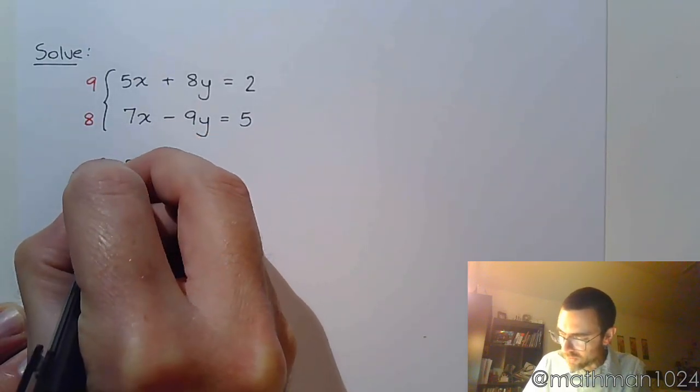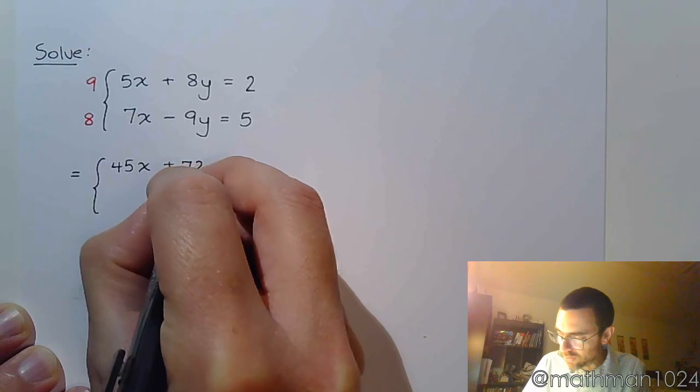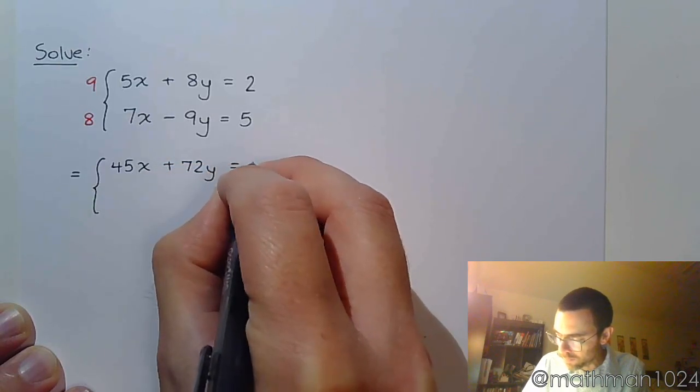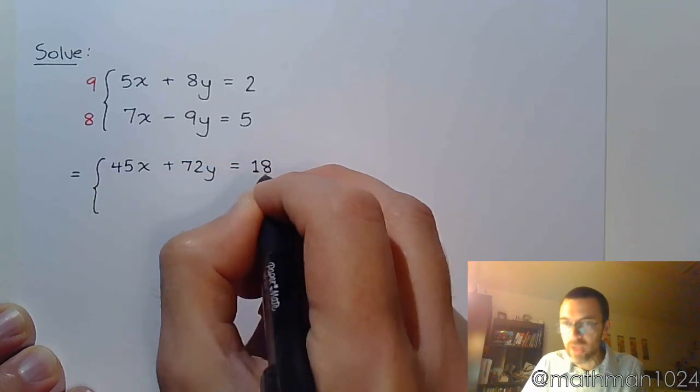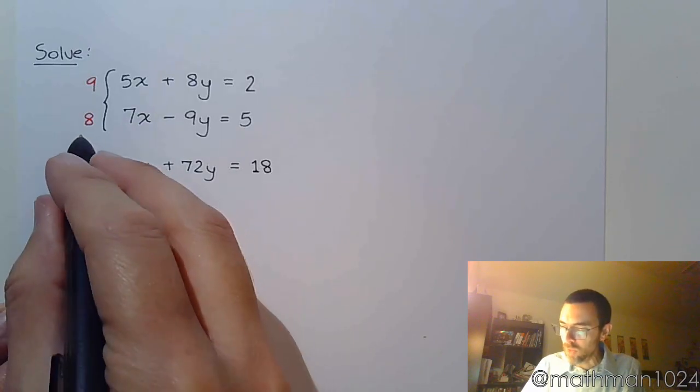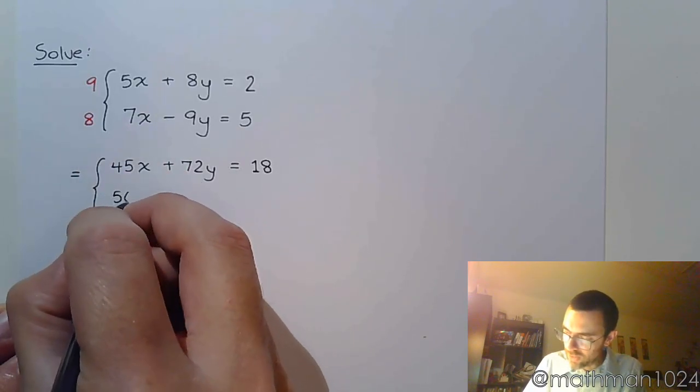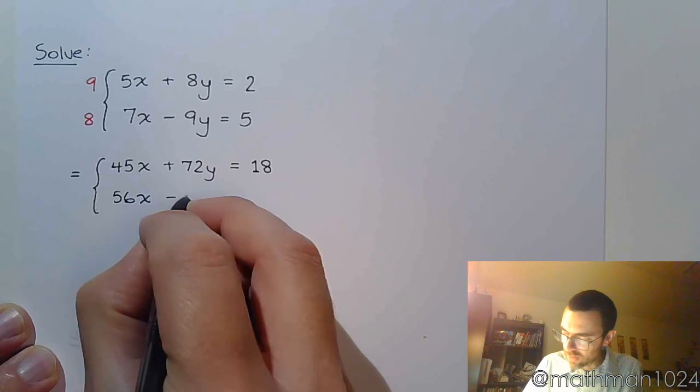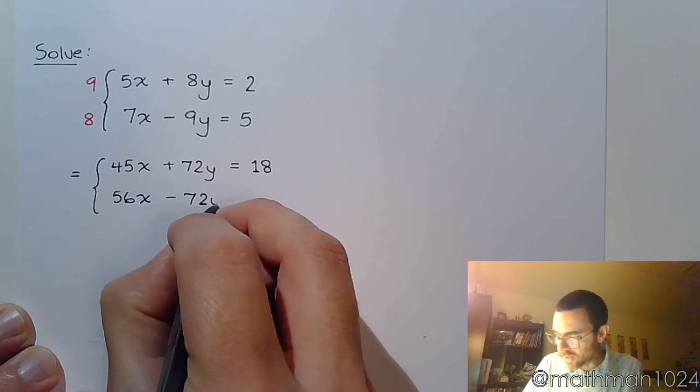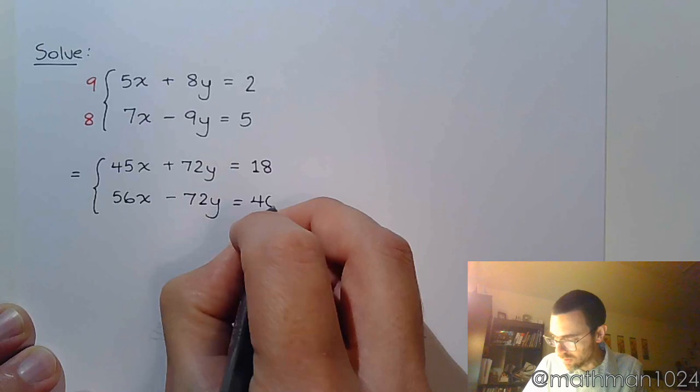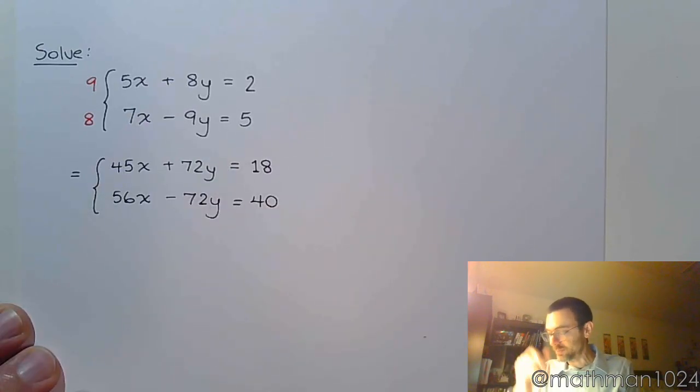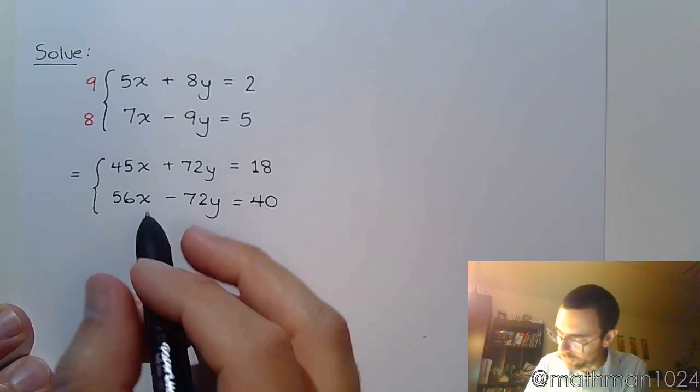All right. So we get 45x plus 72y equals 18. And then down here, that's 56x minus 72y is equal to 40. All right. Make sure that I've distributed, multiplied everything correctly. Okay. Feel good about that.